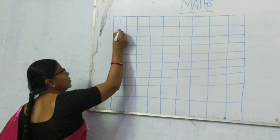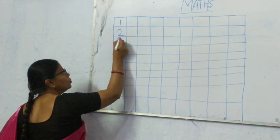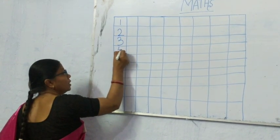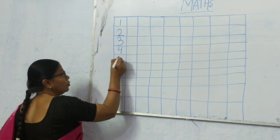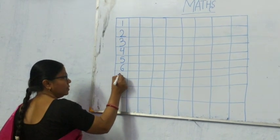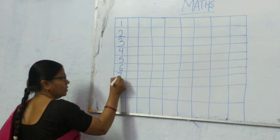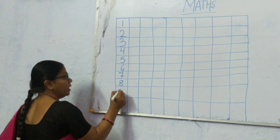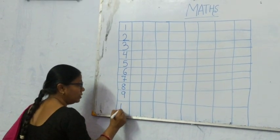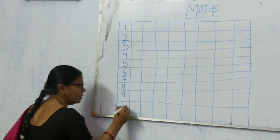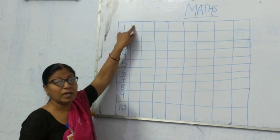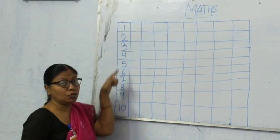1, 2, 3, 4, 5, 6, 7, 8, 9, 10. After 10, we will leave one column.